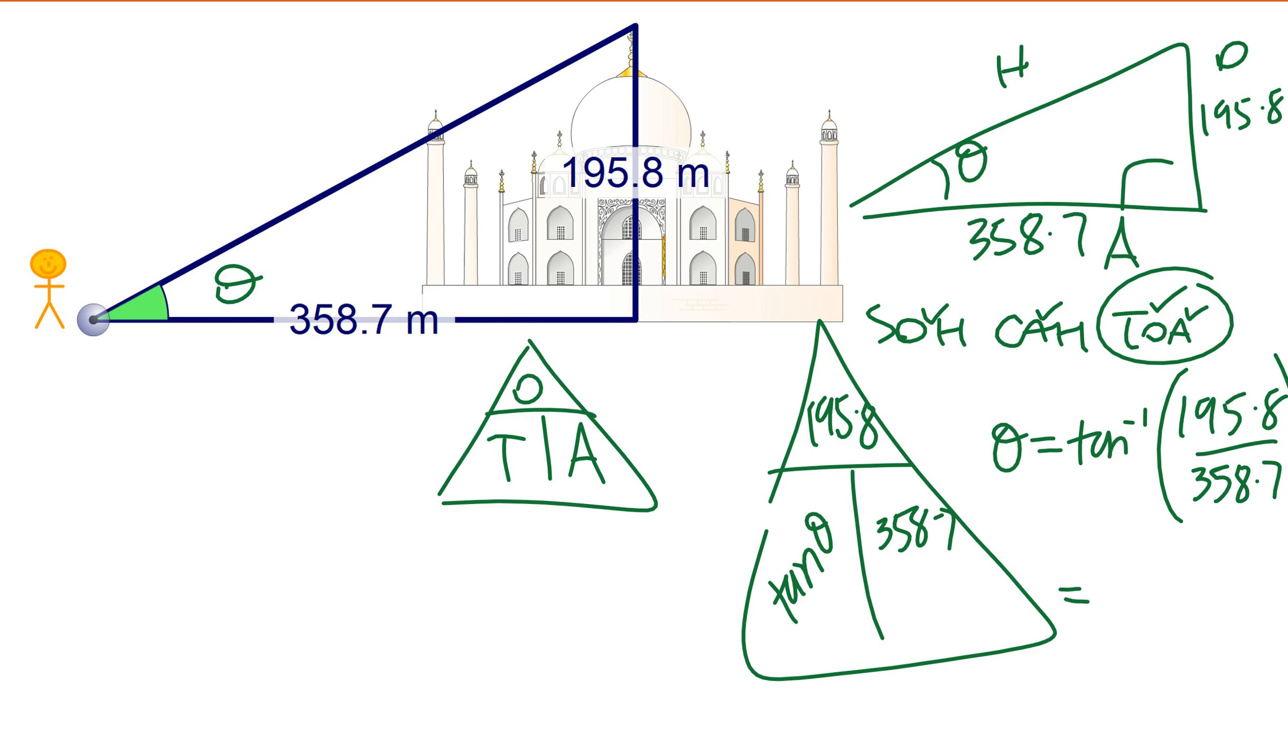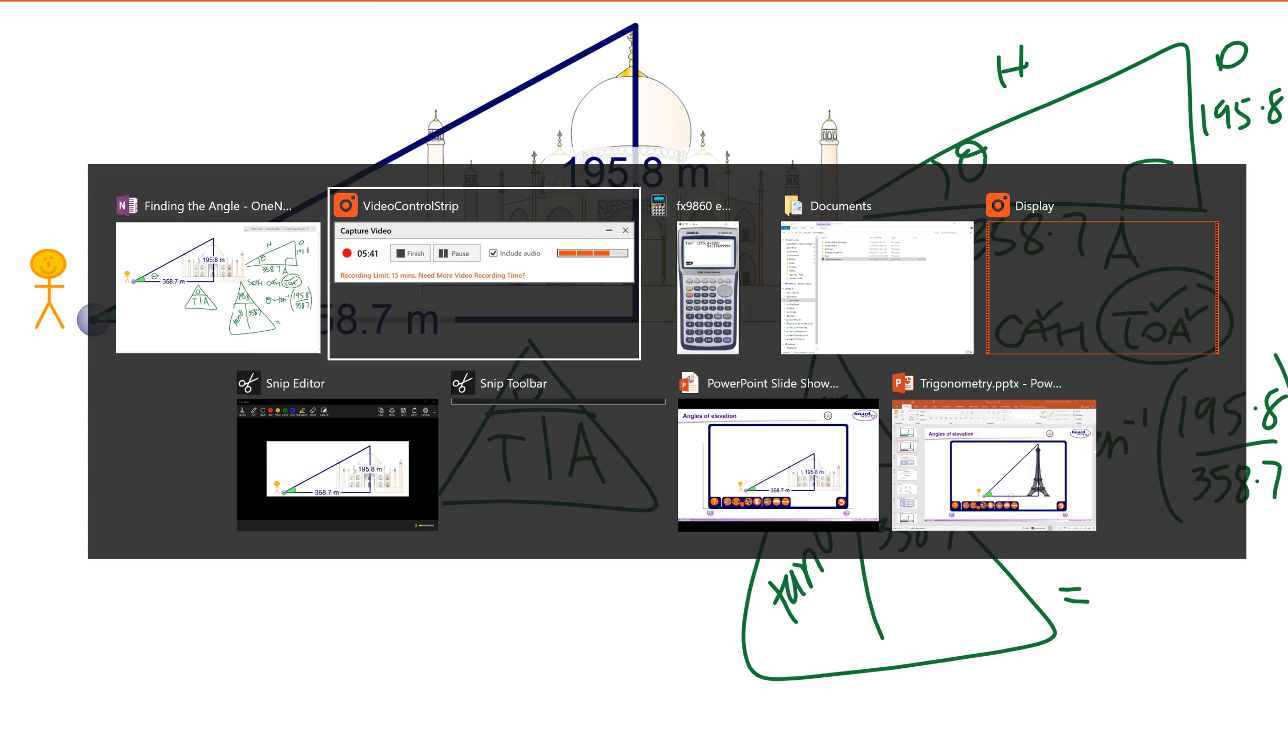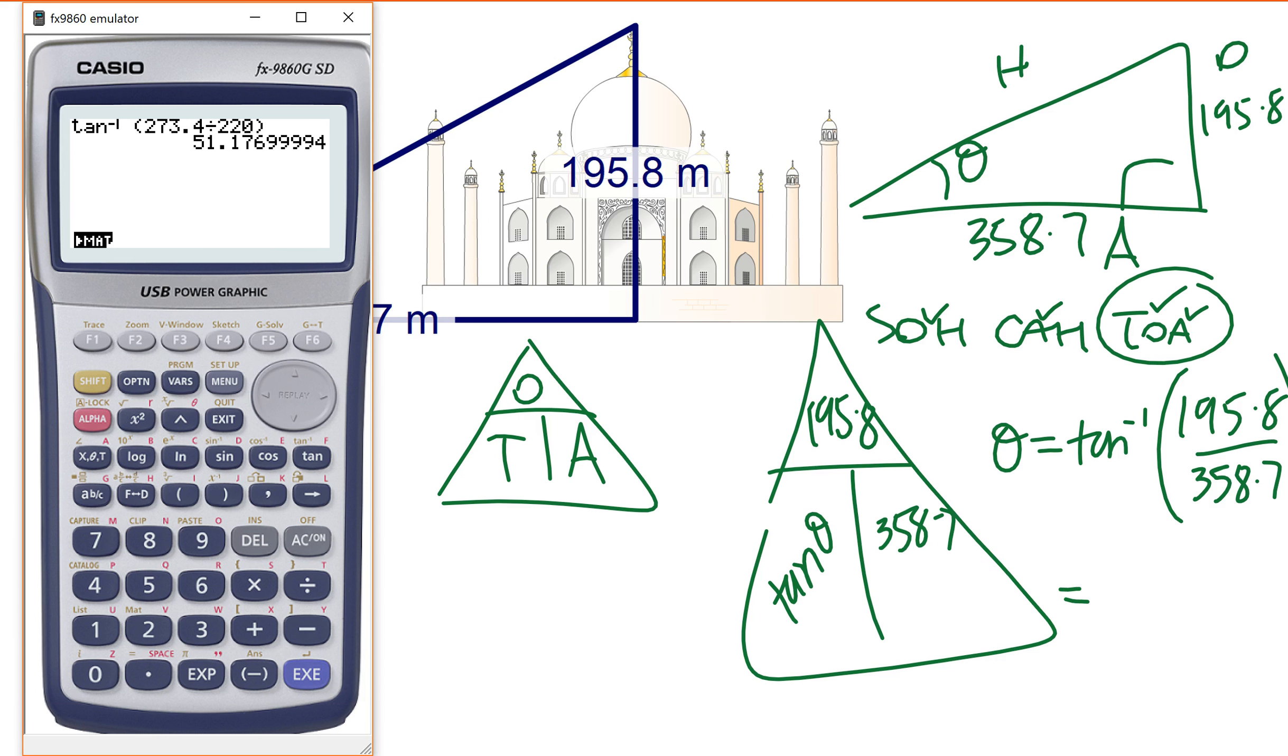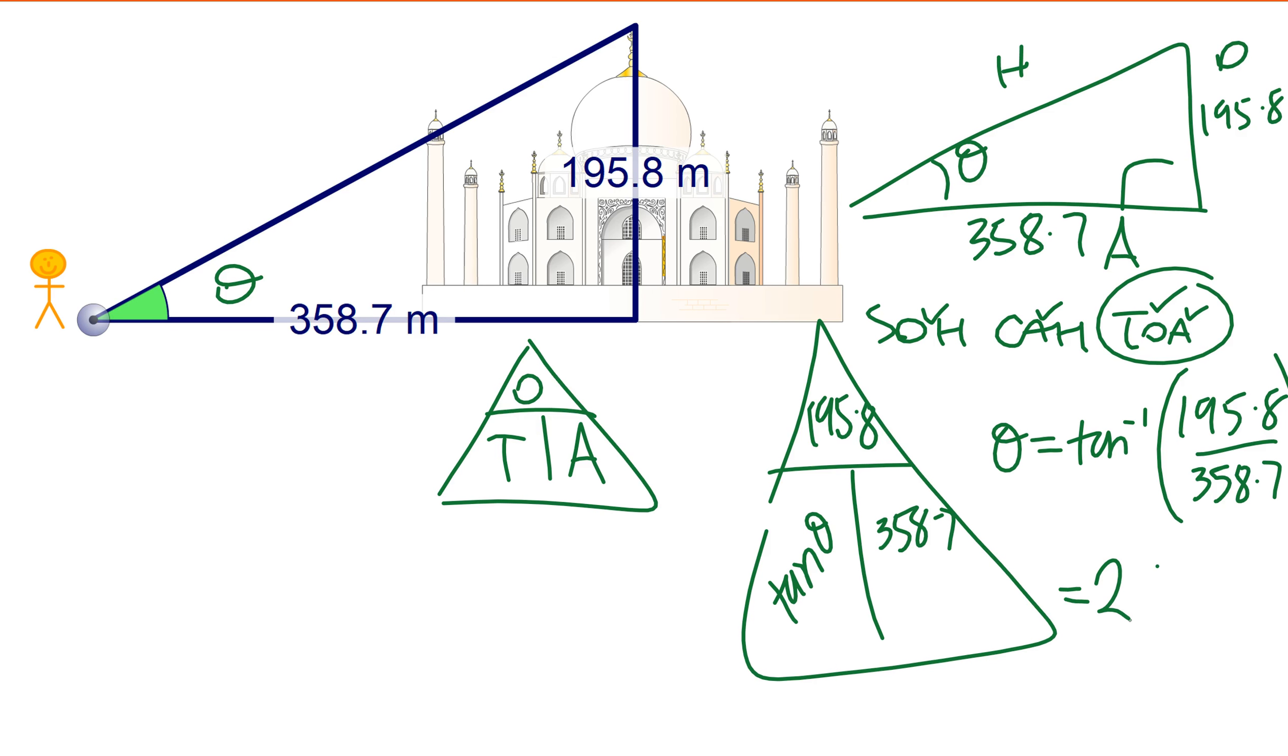Which equals, let's bring up my calculator again. Shift tan, 195.8 divided by 358.7. Press equals, 28.6, 28.6 degrees.